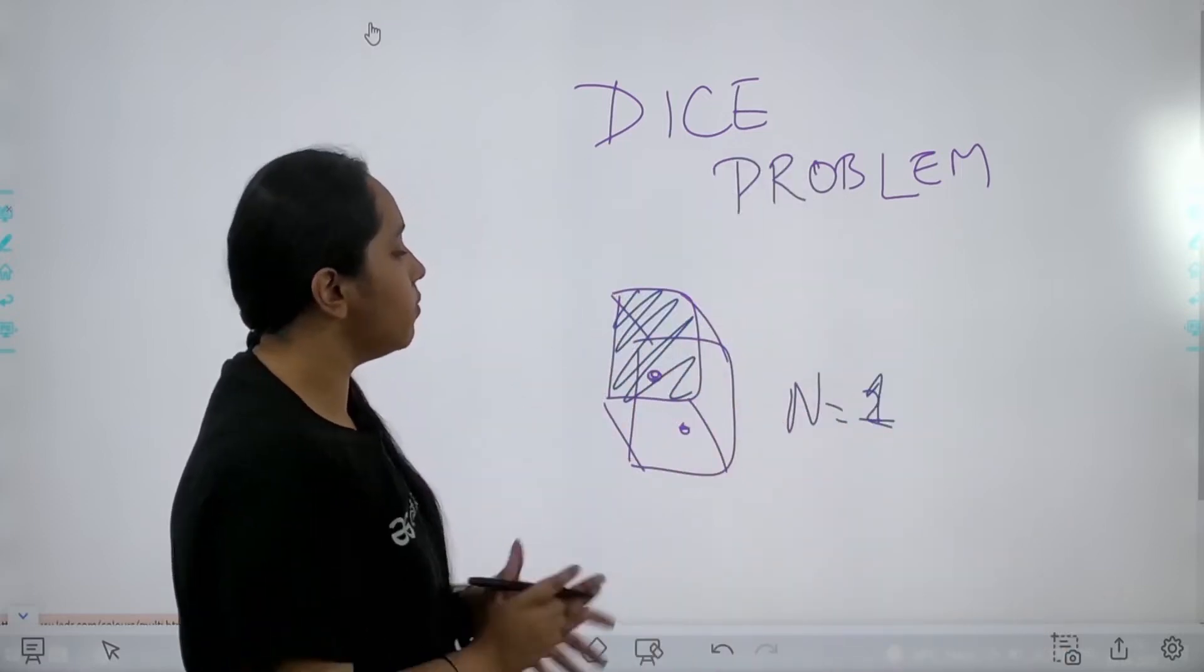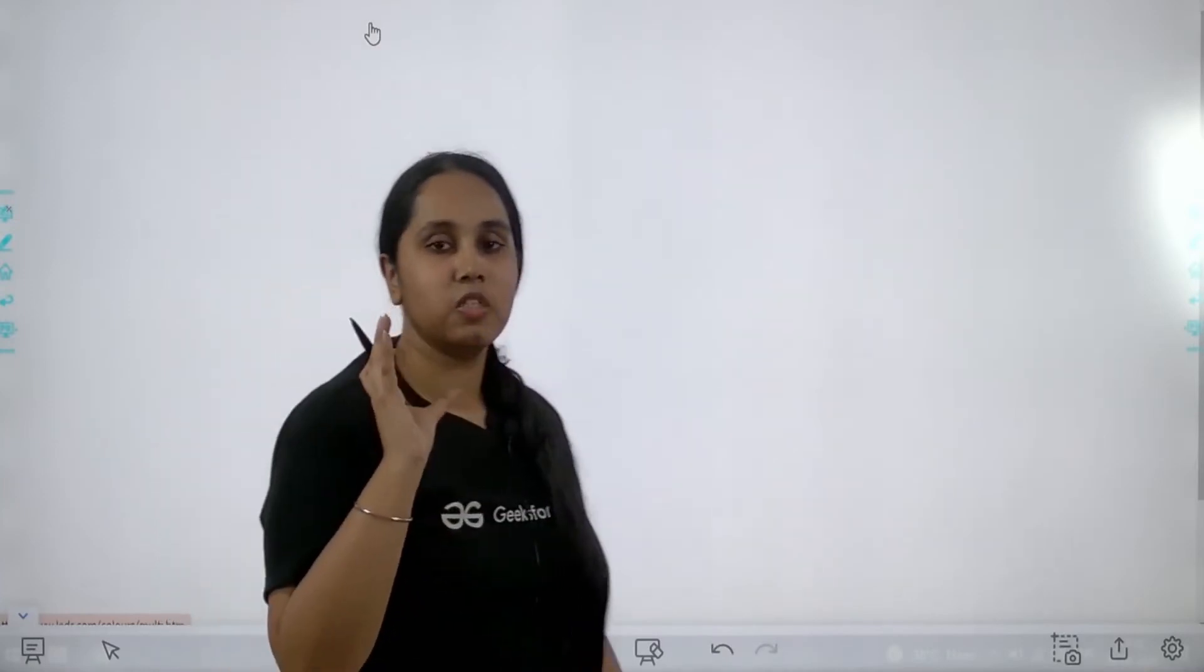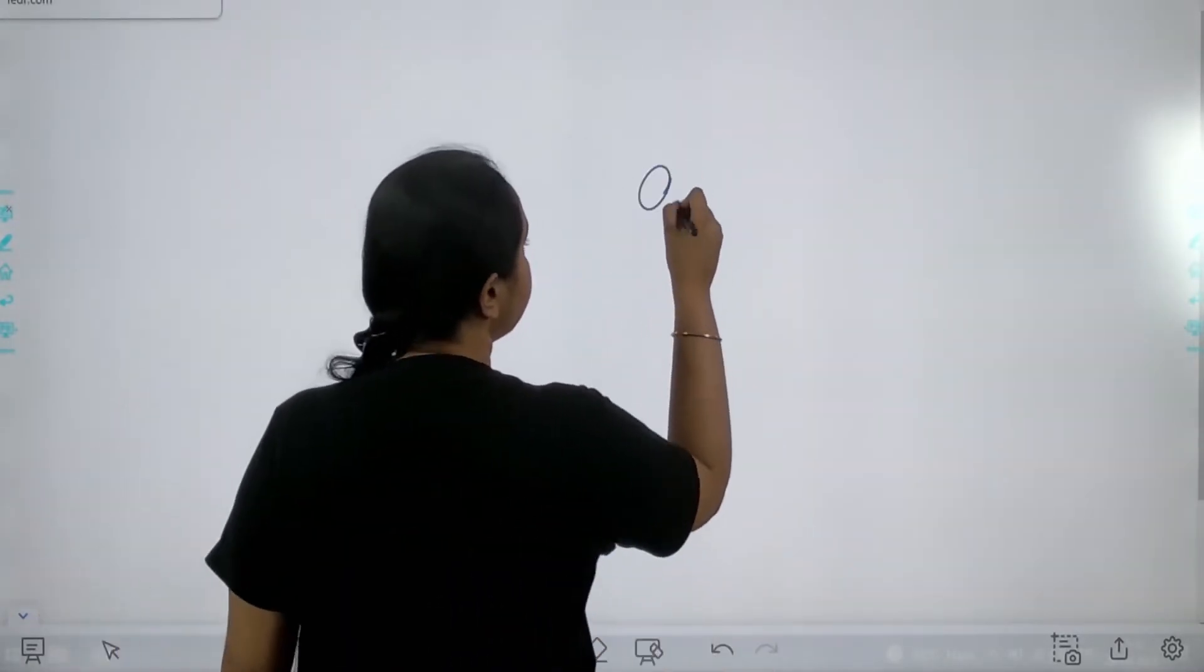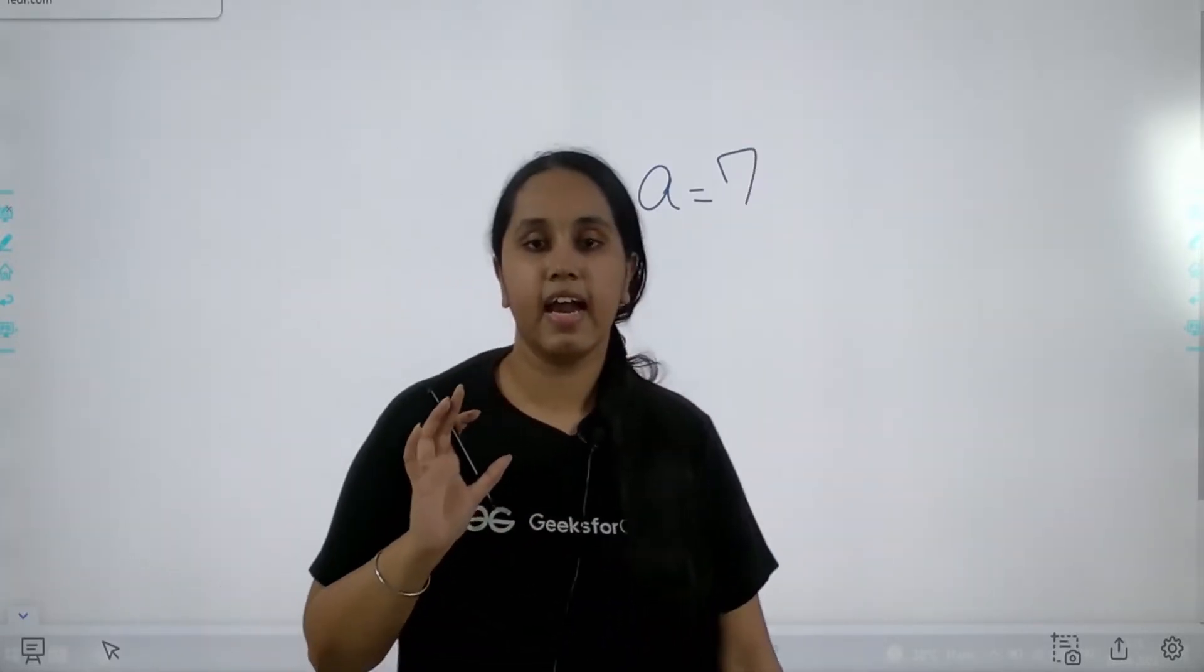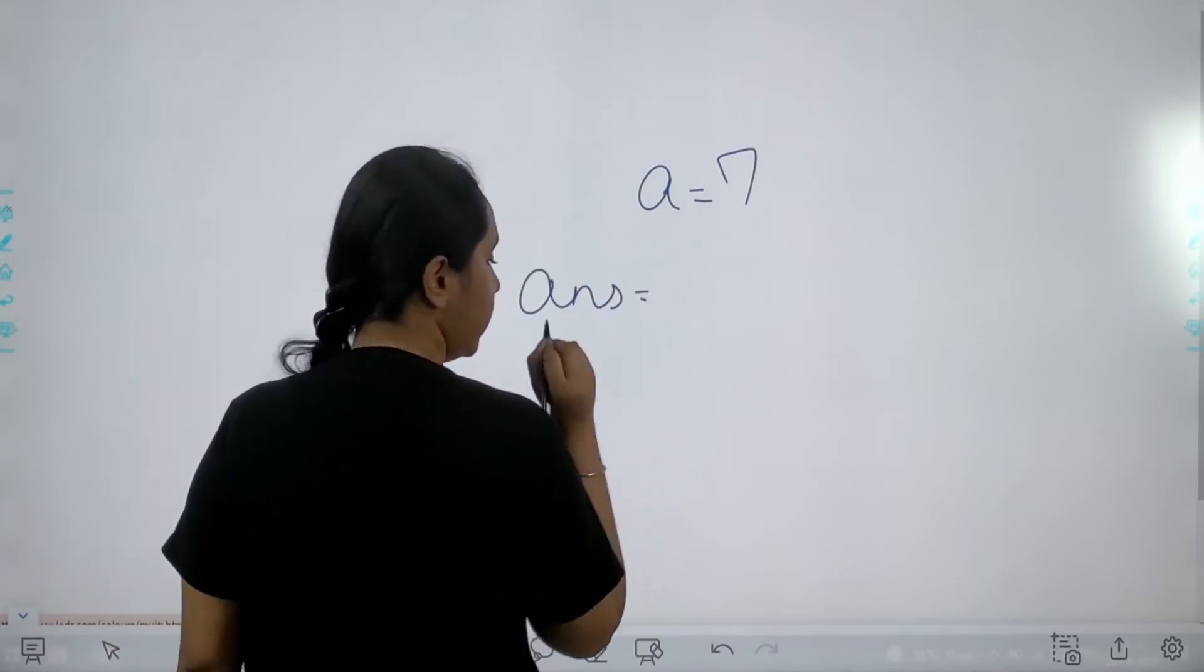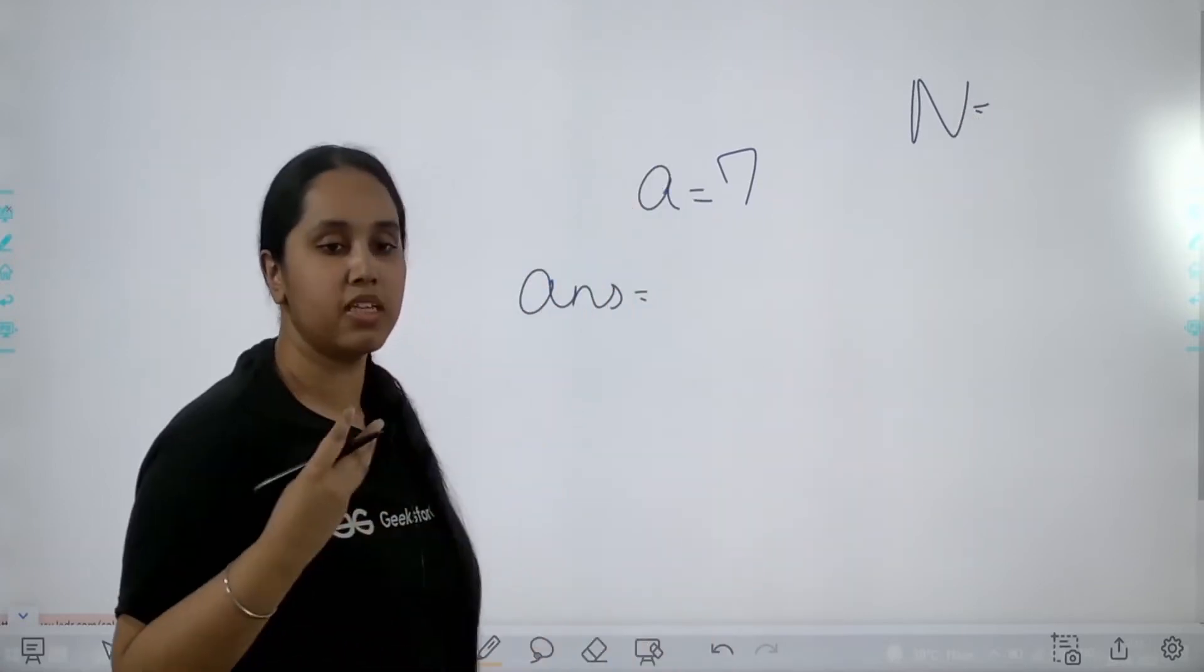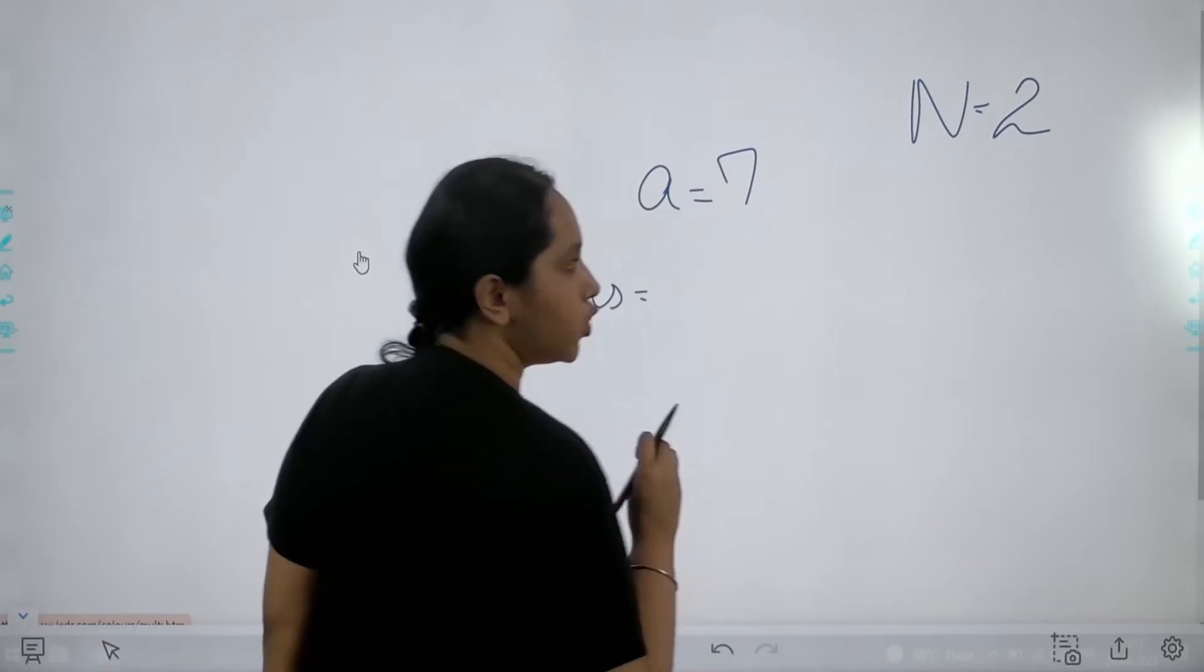This is the problem that we need to solve. So for solving this we would apply a small trick and that trick is we would take a variable a equal to 7. We would just consider it and now what we would do is we would say answer equal to, now see I am being given n value right. They are giving me the value of n for example they gave it to me 2.